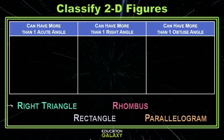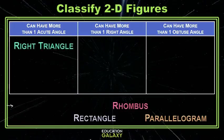But it always has two acute angles along with its right angle. So a right triangle does indeed have more than one acute angle.